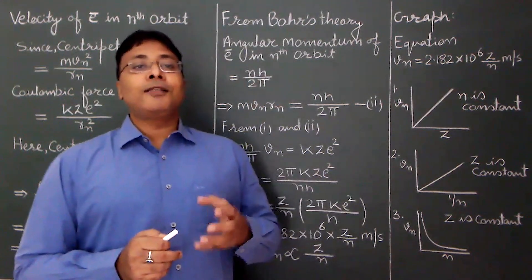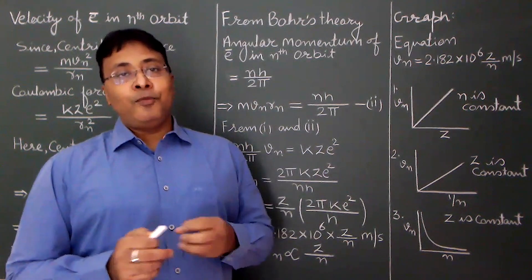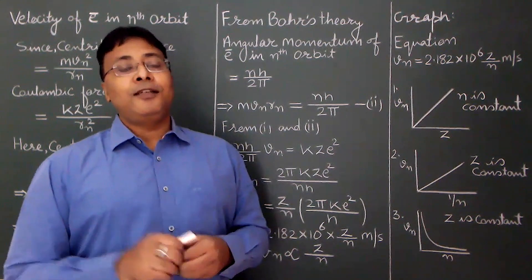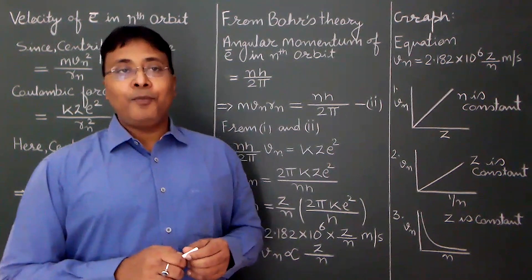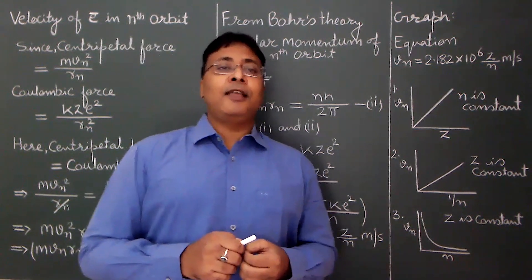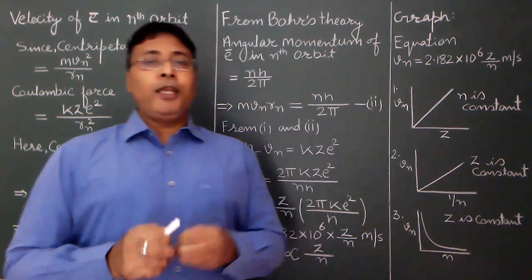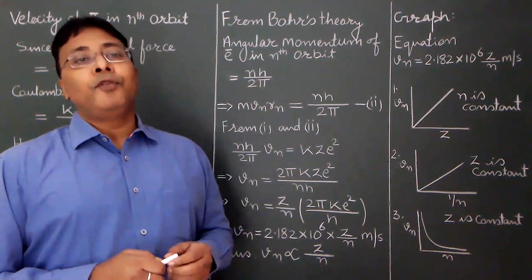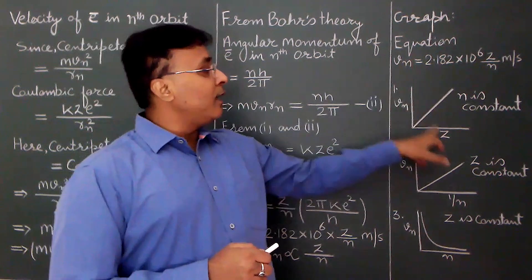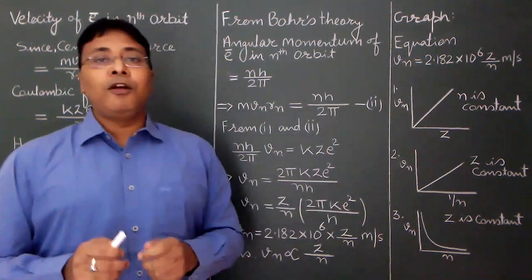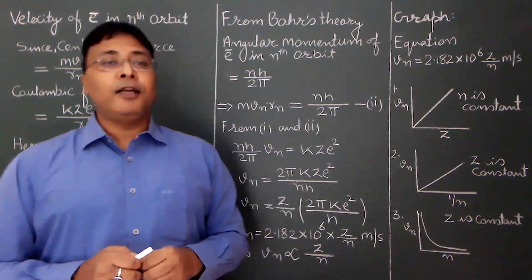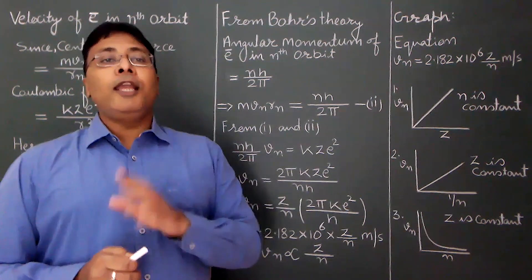If the product of x and y is constant, the graph is a rectangular hyperbola. Now for the vn versus z plot — velocity of electron in nth orbit versus atomic number — with n constant. Placing vn on y-axis and z on x-axis, the remaining factor 2.182 × 10⁶/n is a constant since n is constant.